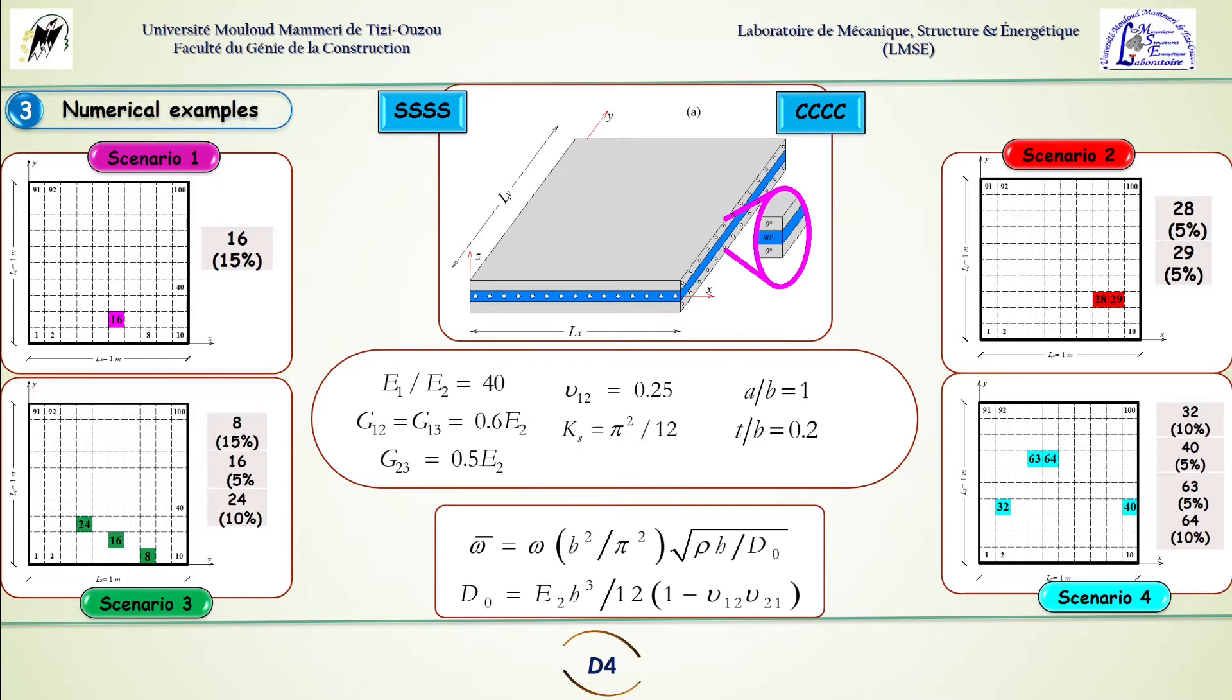The composite plate that we considered is subjected to two different boundary conditions. We refer to them as S and C and we considered in this paper four damage scenarios.